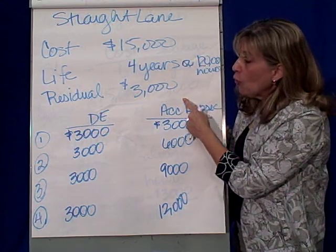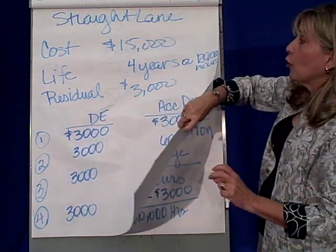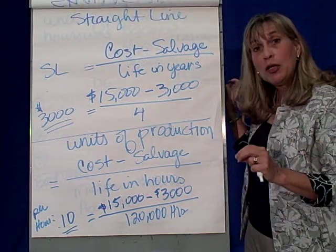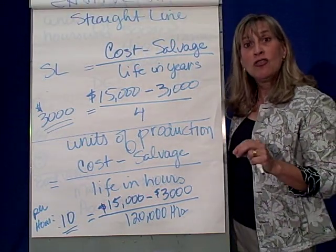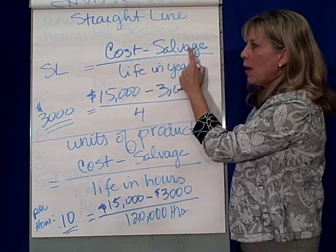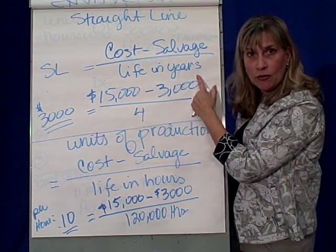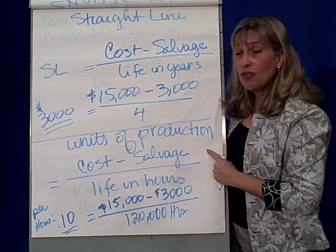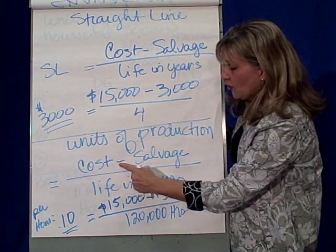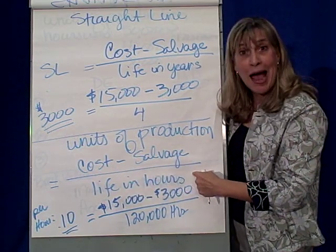What we're going to do is compute the depreciation similarly to straight line — remember straight line was cost minus salvage over life in years. But now under units of production, it's cost minus salvage over the life in hours.